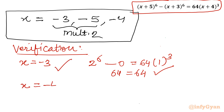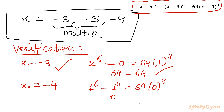Second solution, x = -4: left side is (−4+5)⁶ − (−4+3)⁶ = 1⁶ − (−1)⁶ = 1 − 1 = 0. Right side is 64·(−4+4)³ = 64·0 = 0. So 0 = 0. This is also verified and true.